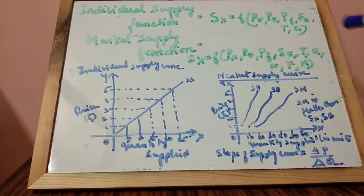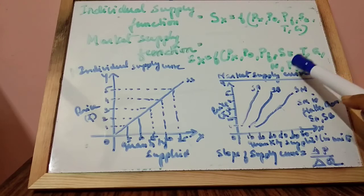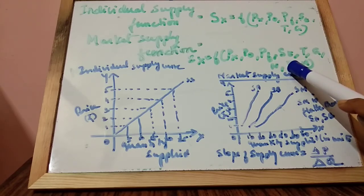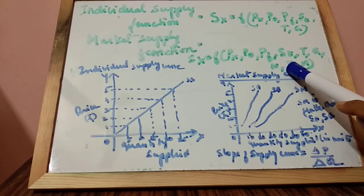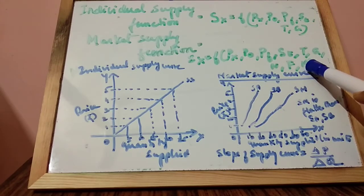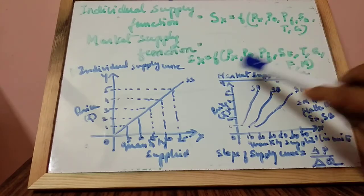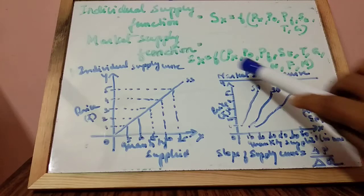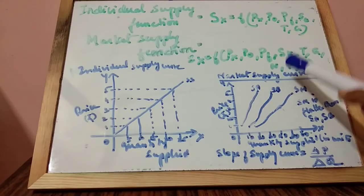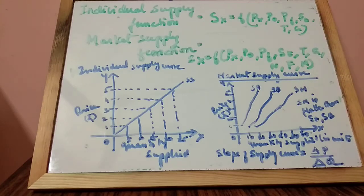Additionally, N — number of firms in the market doing production. Then F — future expectation regarding the price of the given commodity X. M — means of transportation and communication. So these are all the factors affecting the supply in the market supply function.